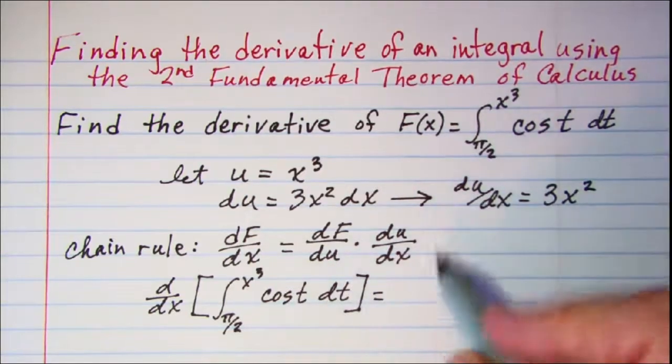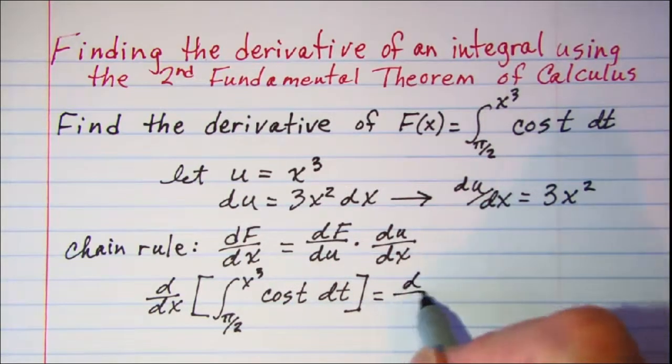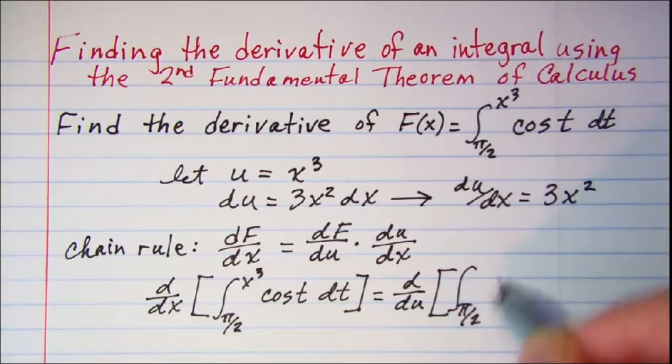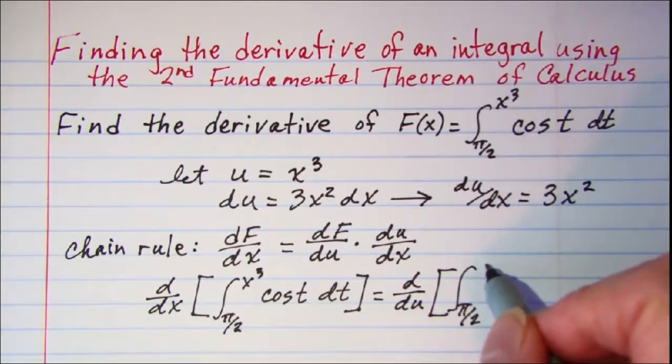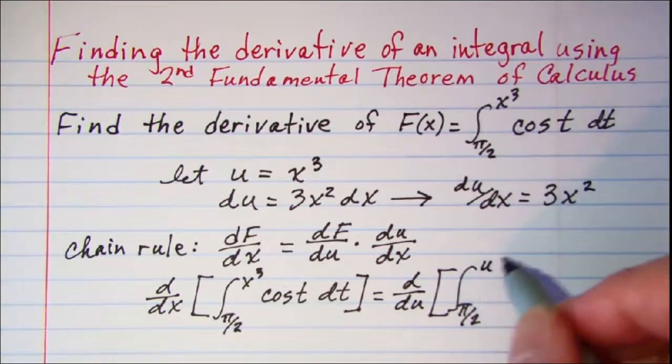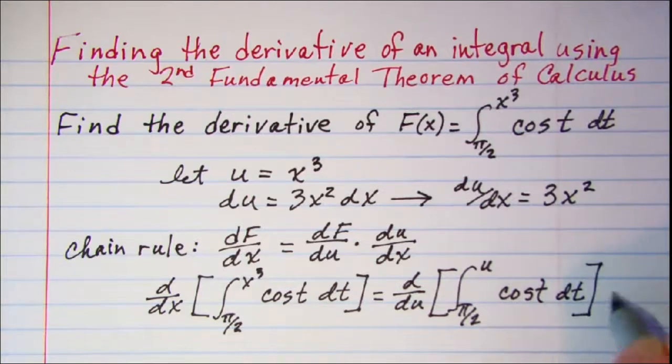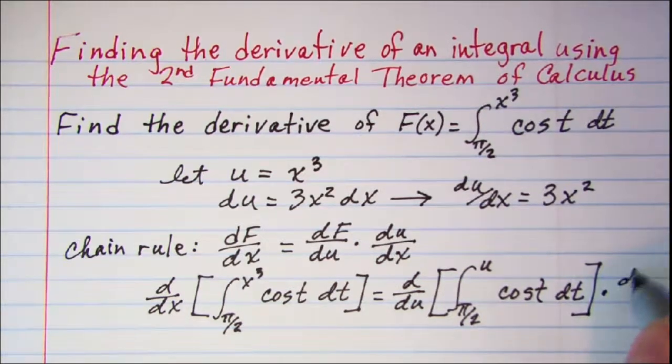The integral from pi over 2 to x cubed is equal to the derivative of f with respect to u, and now in place of x cubed I'm going to put my u in, and then cosine t dt multiplied by du dx.